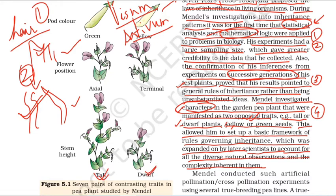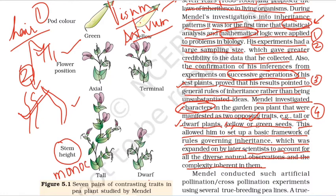One of the characters studied was stem height, which shows contrasting traits. When one character is studied in a cross, this is known as a monohybrid cross. This is how Mendel contrasted the characters he studied.